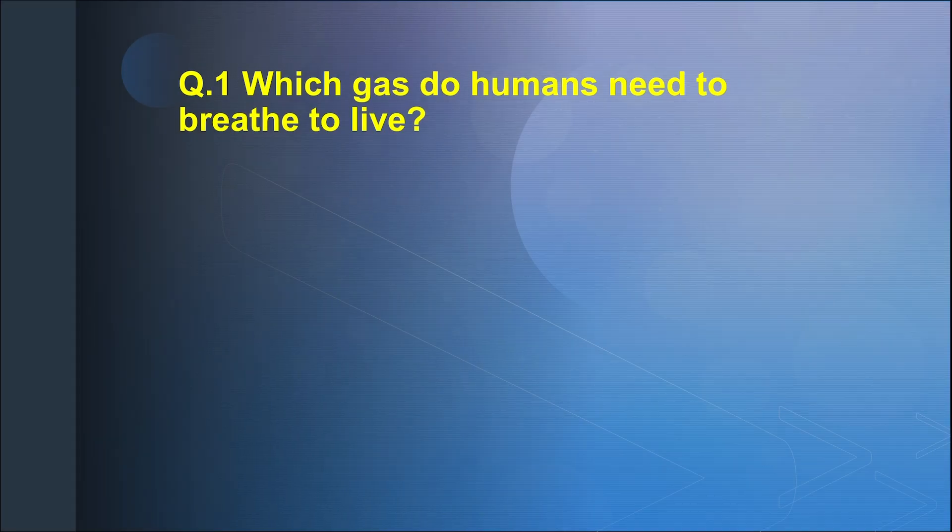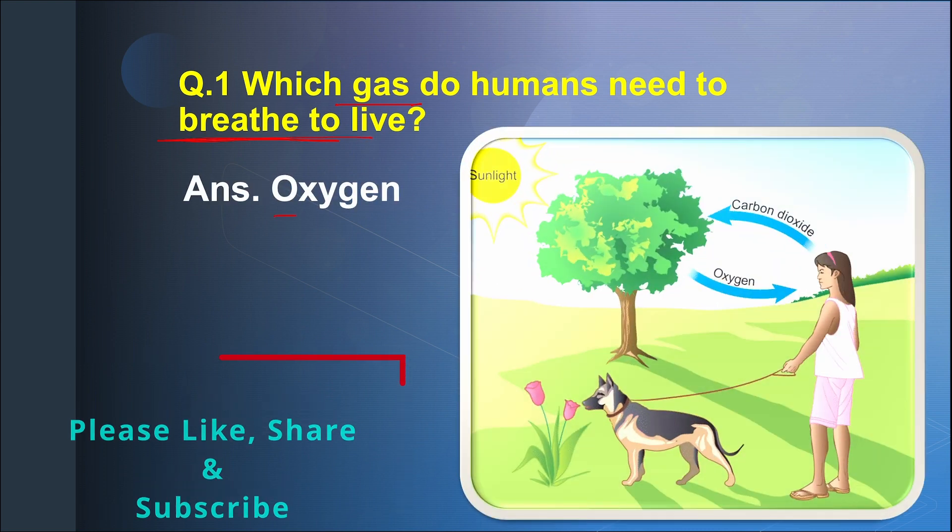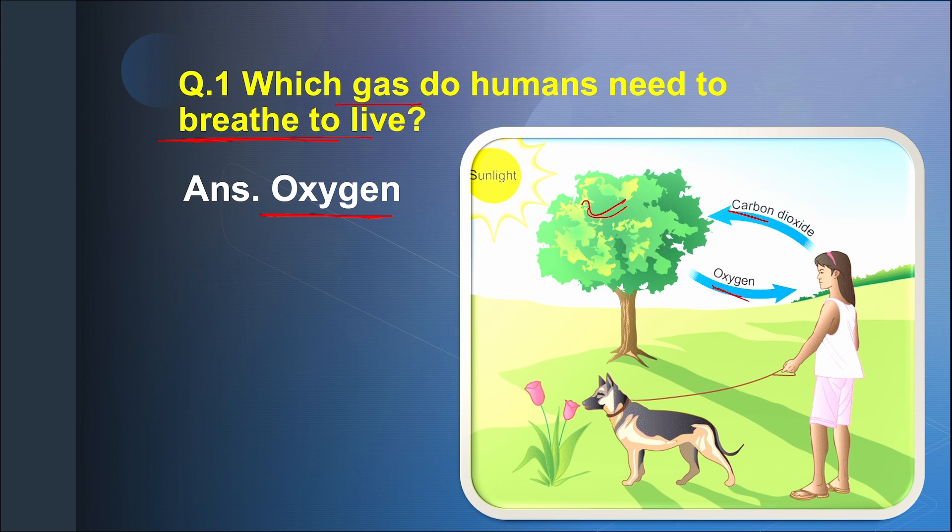Question 1. Which gas do humans need to breathe to live? Answer: Oxygen. They exhale carbon dioxide and inhale oxygen. Plants inhale carbon dioxide and give out oxygen.